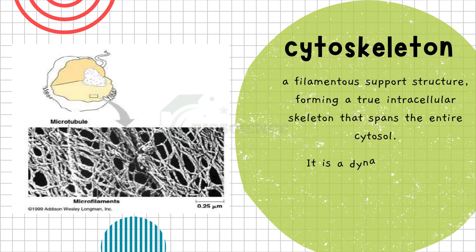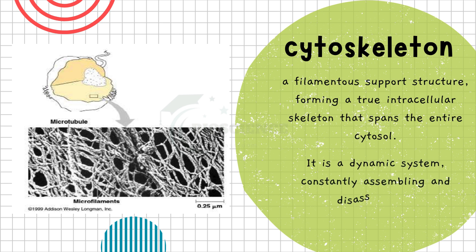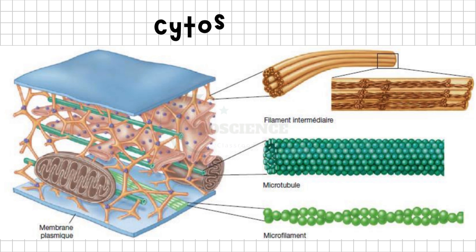It is a dynamic system, constantly assembling and disassembling. This property is crucial for enabling various cellular processes, such as cell division and intracellular transport. Here, we can observe how the cytoskeletal filaments interact to form a complex network within the cell.